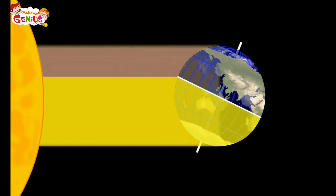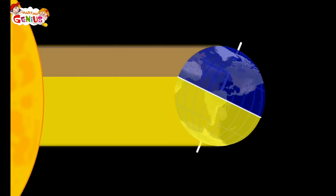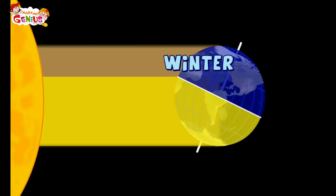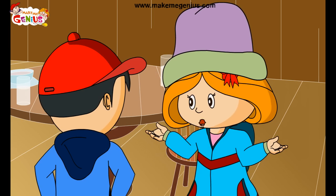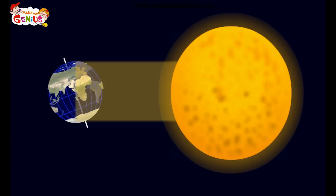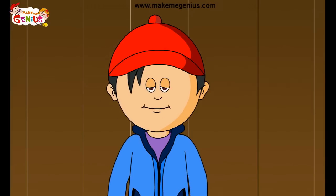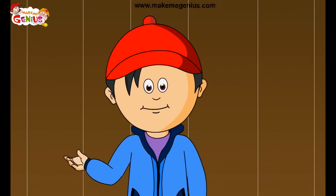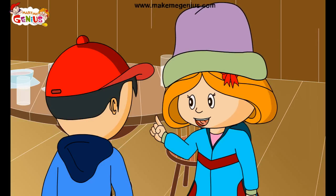So more sunlight hits the southern hemisphere directly — it heats up and gets summer. In the northern hemisphere, less sunlight comes in at an angle, so very less heat is available and hence there is winter. As the year progresses, the Earth's tilt changes so the south pole points away from the Sun, bringing winter to that part. So the Earth's movement and its tilt are responsible for changes in the seasons.